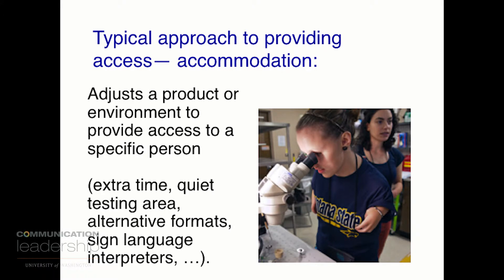The typical approach for dealing with disability is to adjust the product or the environment for a particular person — that's called an accommodation. We might provide extra time on a test, a quiet testing area, or an alternative format. For instance, the brochure I handed you is available in an alternative format on the website — intentionally, because this publication as I handed it to you is not fully accessible to many people in its current form. Sign language interpreters — we don't have one here today. Why? Because an offer was made for an accommodation for a sign language interpreter and no one requested one. So accommodation isn't wrong, but we rely on it too much.